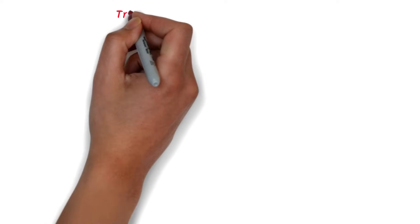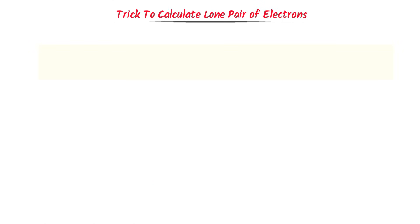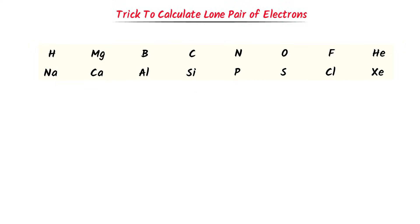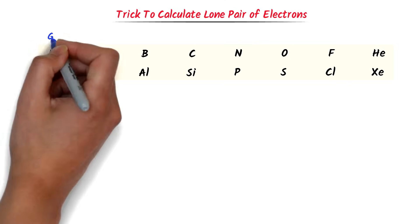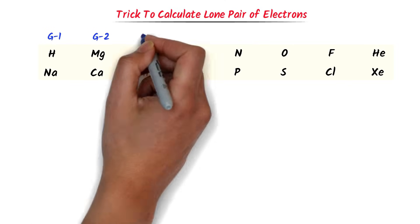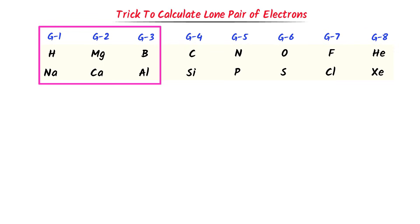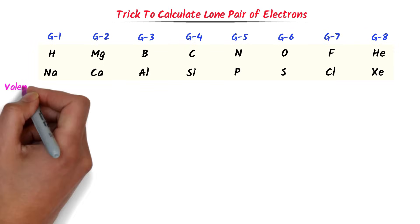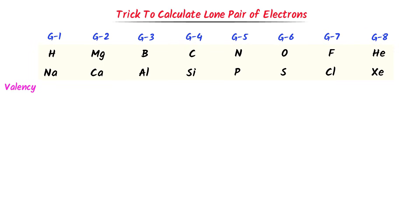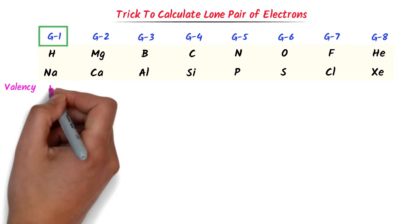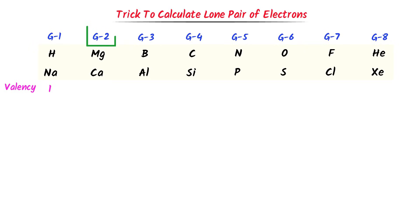Firstly, let me teach you my personal trick to calculate the lone pair on the central atom. Consider these elements of the periodic table. According to Roman numerals, this is the first group, second group, third group, fourth group, fifth group, seventh group, and eighth group. Group 1, group 2, and group 3 elements are metals. Their valency is their respective group number. For example, the valency of group 1 is 1, group 2 is 2, and group 3 is 3.